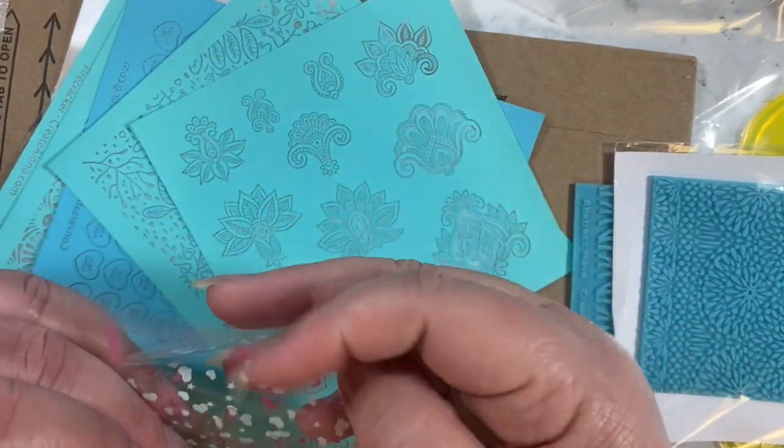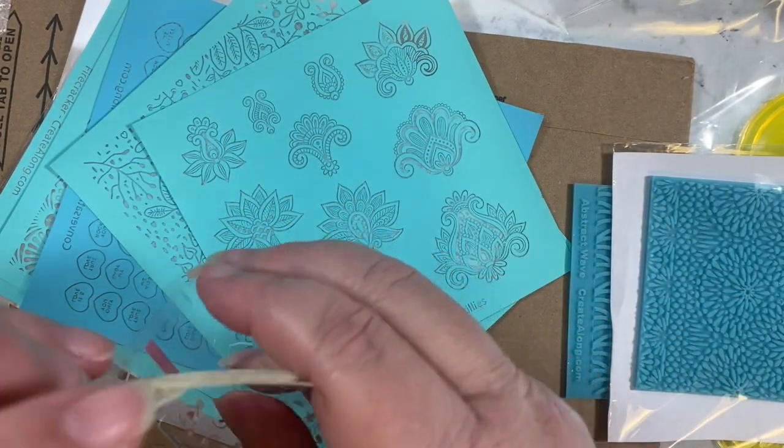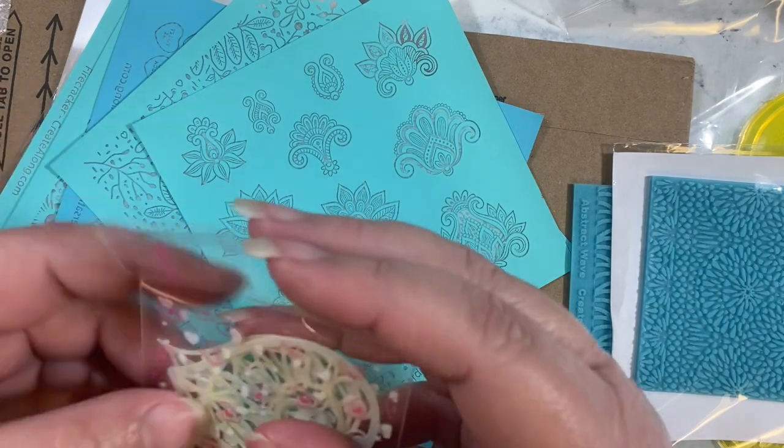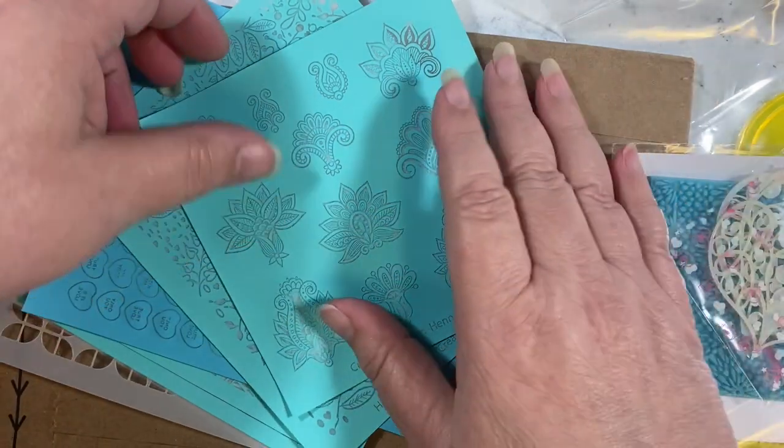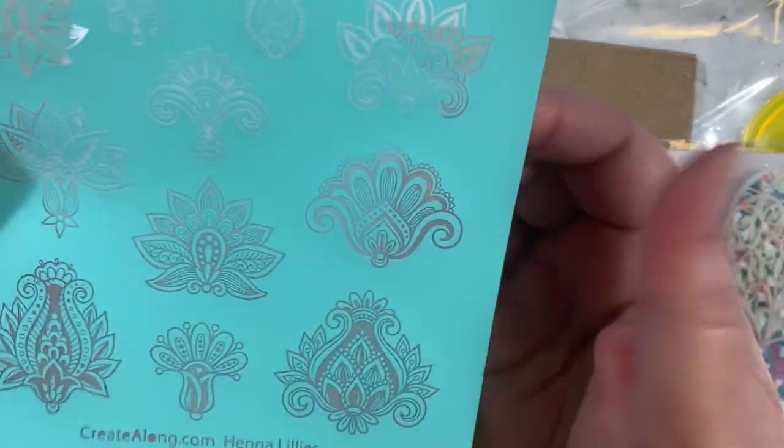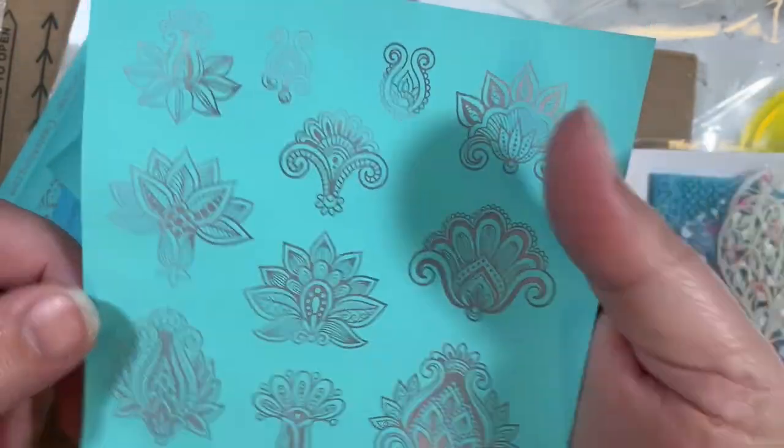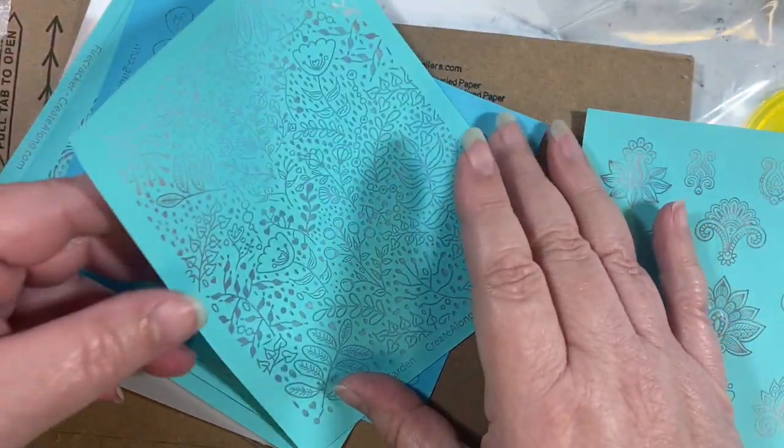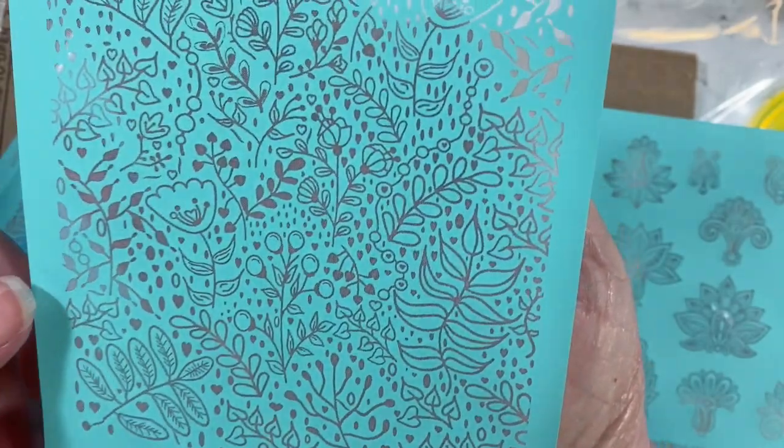And then we have some silk screens which I'm excited to try. I have stencils, but I don't think I've done silk screens. So these are henna lilies. This one is quite beautiful. This is herbal garden.